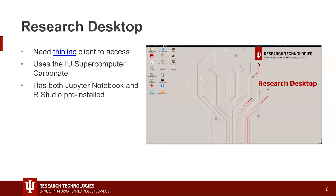This is an image of what Research Desktop looks like — it just looks like a desktop, which is really nice because you now have access to the Carbonate supercomputer through an interface that most people recognize and can use. Prior to this, we had Karst desktop, and before that you had to use a command line to access the supercomputers. So this makes it a lot easier for people who aren't as familiar with command line to still be able to utilize these supercomputers to do some really neat, interesting things.